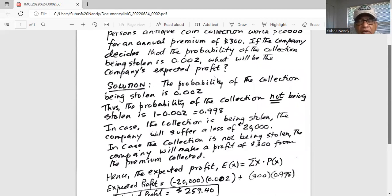Here, there are two random variables. One is the coin collection being stolen and the second one is the coin collection not being stolen. So one event, the coin collection is stolen. Second event is the coin collection being not stolen.